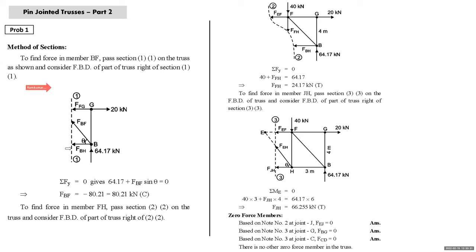Now for the third problem: find reactions at D and C, identify zero force members, find force in members FE, EC, and DC by method of sections, and remaining members by method of joints. To find reactions, we need to understand the geometry. In triangle ACD, this angle is 120 degrees, so triangle ACD is isosceles, meaning AC = DC = l. Dropping a perpendicular, CC1 = AC·cos 60° = 0.5l.